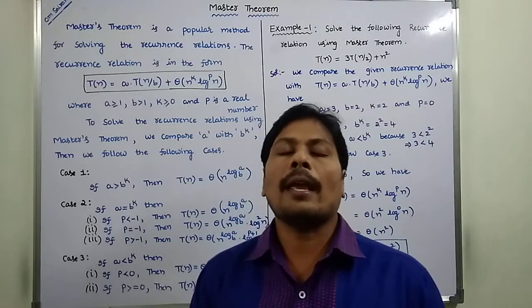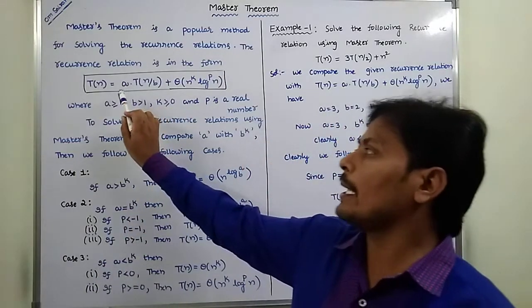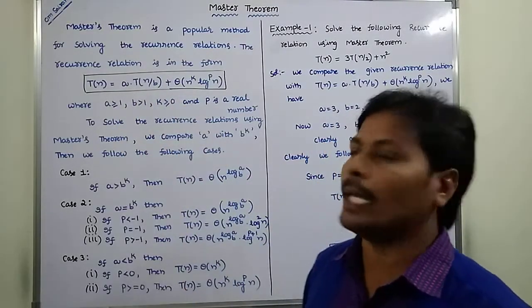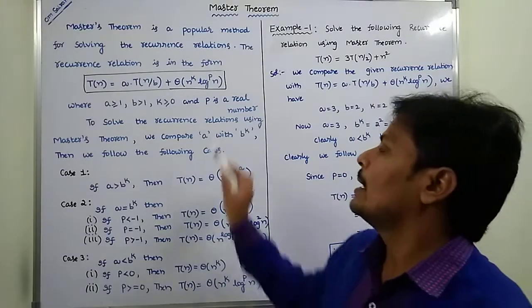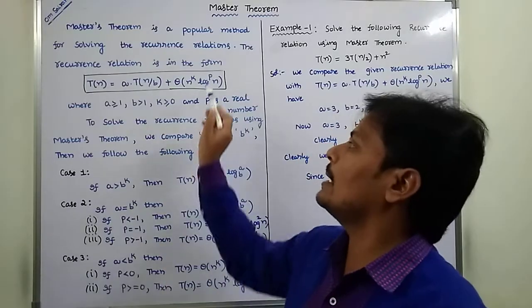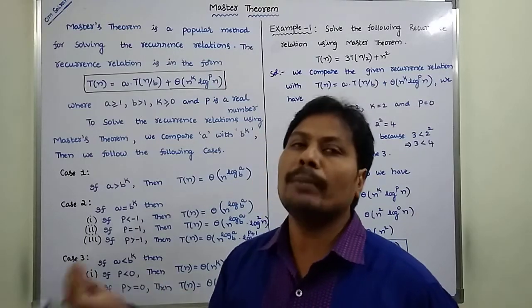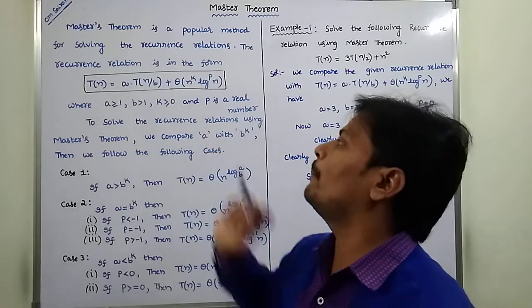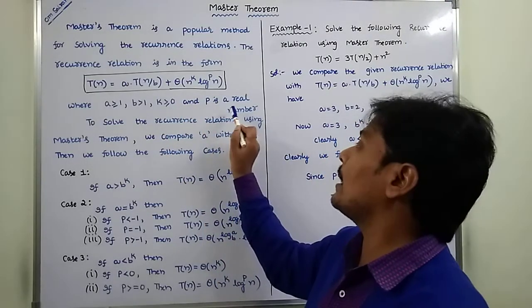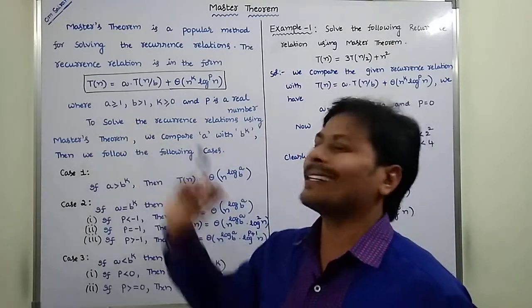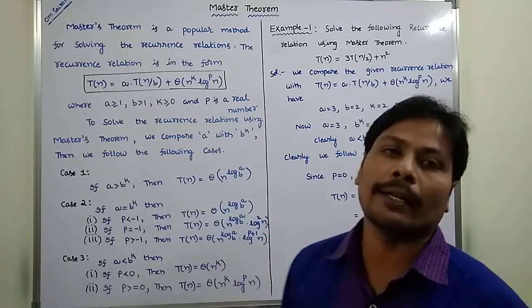Master Theorem is a popular theorem for solving a given recurrence relation in the standard form: T(n) = A·T(n/B) + Θ(n^k · log^p n). Here, A and B are constants, k is greater than or equal to 0, and p is a real number. A must be greater than or equal to 1, B greater than 1, k greater than or equal to 0, and p is a real number.